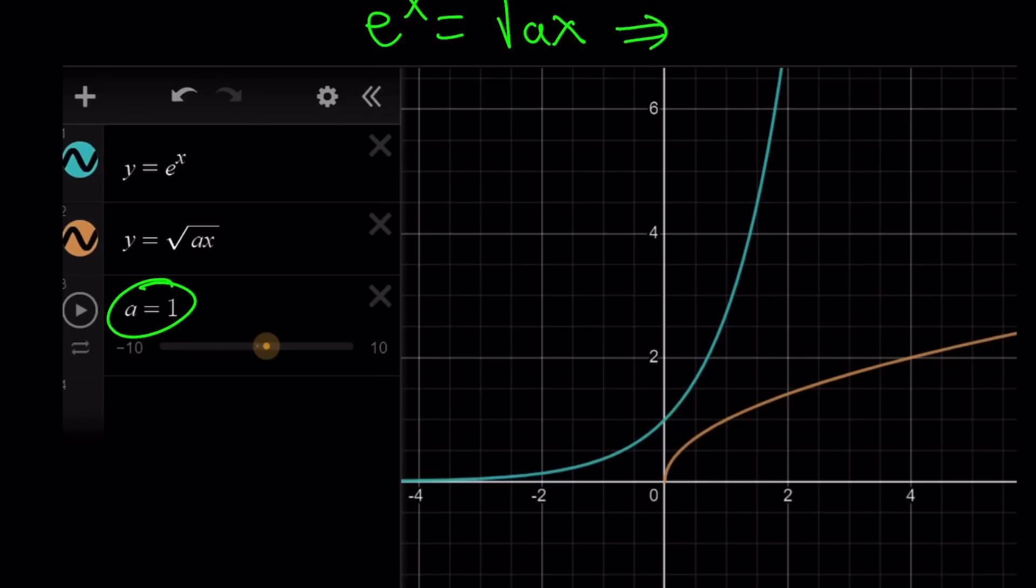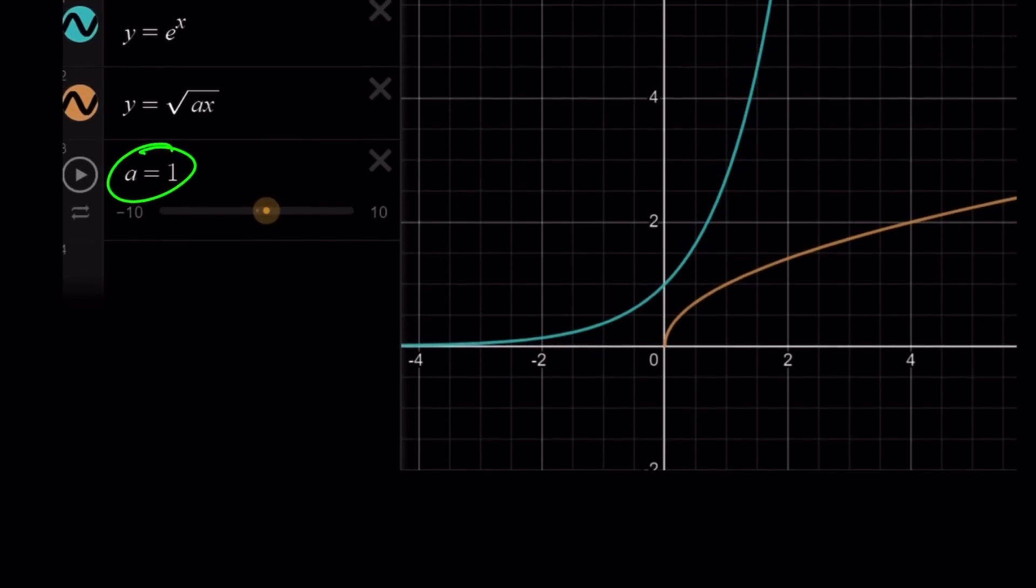And here we have the special scenario where a equals 1. Obviously, if a is equal to 1, you get e to the power x equals square root of x. But unfortunately, they do not intersect. So there are no solutions to this equation for a equals 1. We're going to take a look at it later one more time.